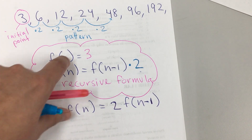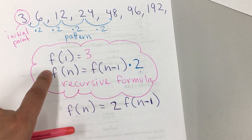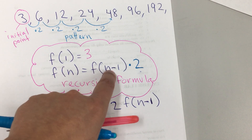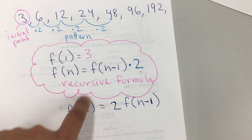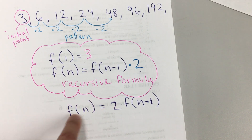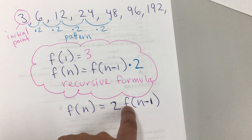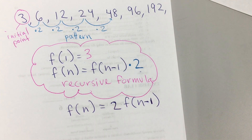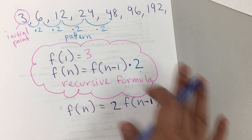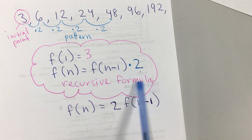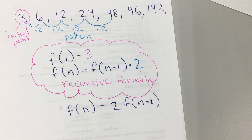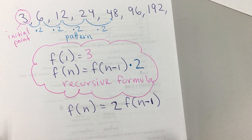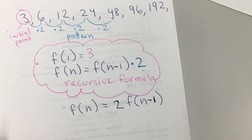Even if it doesn't have the little dot, since it's a coefficient, it means multiplication. So, f of 1 equals 3. f of n equals f of n minus 1 times 2. Or, this could replace this one: f of n equals 2 times f of n minus 1. That's all you're doing right now — just writing the recursive formula if you're given a list of numbers. Let's do one more.